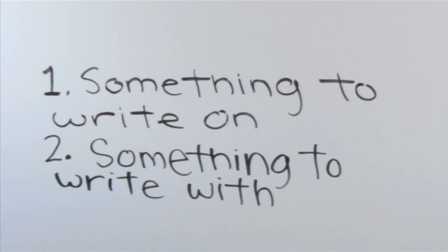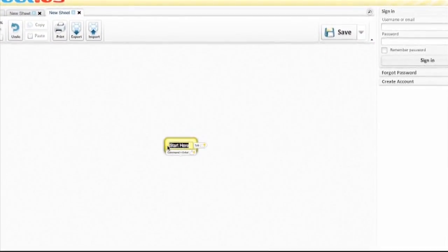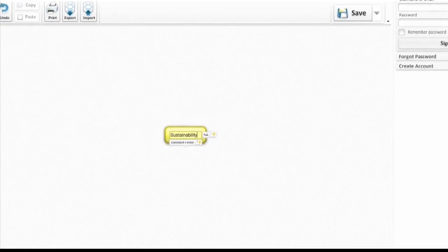To make a concept map, you need two things: something to write on and something to write with. You can use online applications like bubble.us, but we prefer getting our hands dirty.